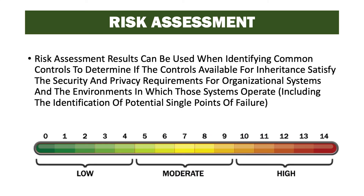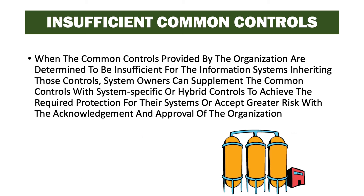Risk assessment results can be used when identifying common controls to determine if the controls available for inheritance satisfy the security and privacy requirements for organizational systems and the environments in which those systems operate, including the identification of potential single points of failure. We can do risk assessments on the organization and on the common control sets to determine if there are any risks inherent in inheriting those controls. When common controls are determined to be insufficient, the system owner can supplement them with system-specific or hybrid controls, or accept a greater risk with organizational acknowledgement and approval.